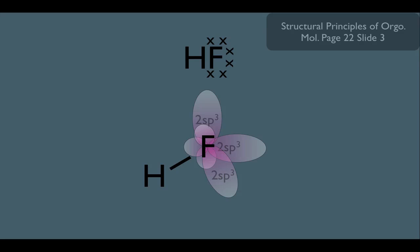This gives us three SP3 orbitals left, and look at our fluorine. Notice it has three lone pair electrons. So basically, each lone pair is housed in each one of these SP3 hybridized orbitals.